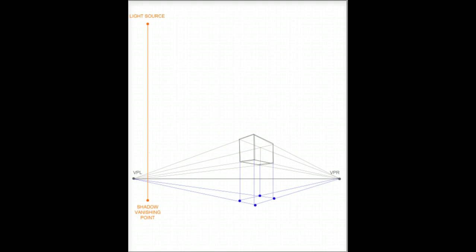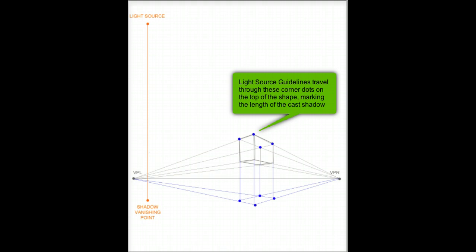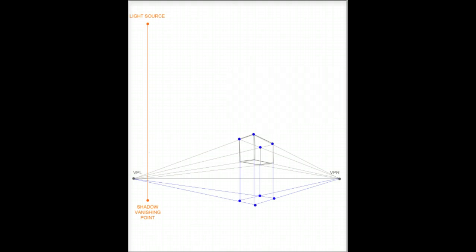Then we want to also mark the top parts of this box, the top corners. And this is very similar to the original cast shadow method. However, in that method you only use three points, and this one we're going to use four because it's floating. The light source guidelines will travel through these corner dots on the top of the shape, marking the length of the cast shadow. These two guidelines will work in conjunction to create the shape of the cast shadow on the ground.